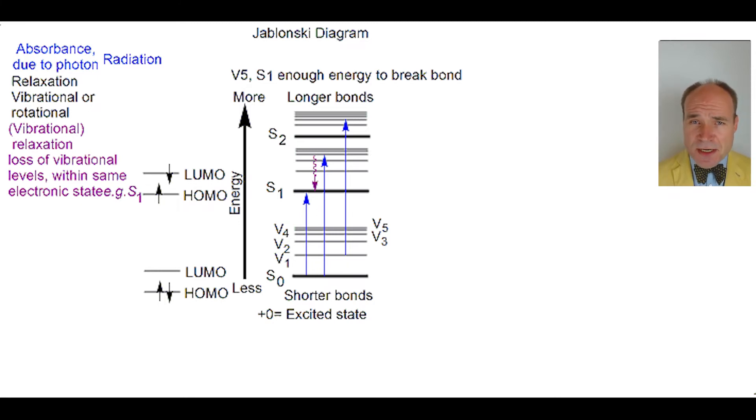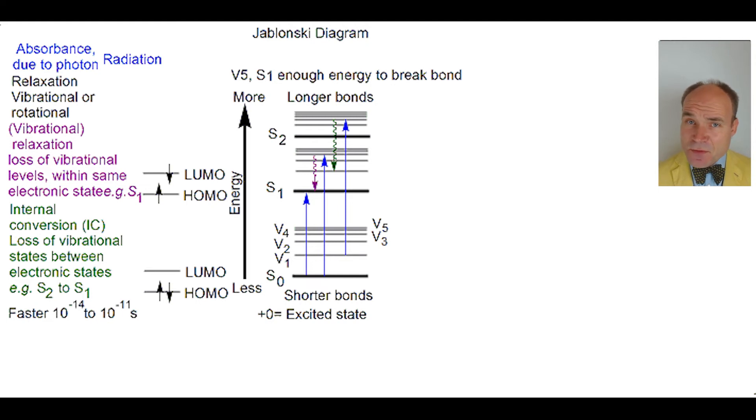An alternative way to lose electron energy is non-radiative internal conversion, or IC. This is where the loss of vibrational or rotational energy is between electronic states, for example, from S2 to S1. These are fast processes, 10^-14 to 10^-11 seconds.